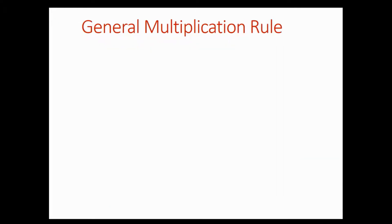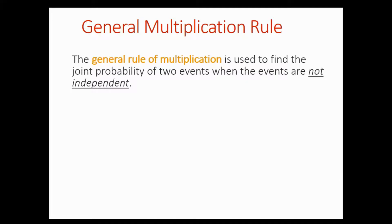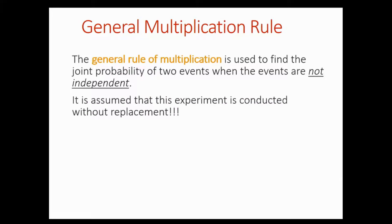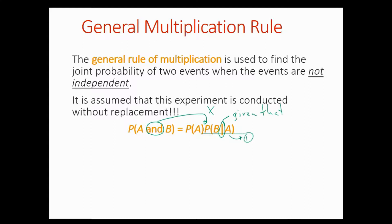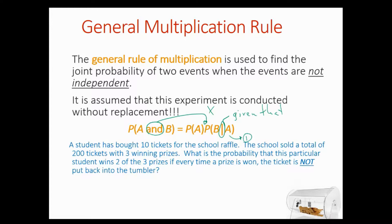The general rule of multiplication is used to find the joint probability of two events when the two events are not independent — meaning one affects the other. So it assumes that this experiment is conducted without replacement. The formula is: the probability of A and B is equal to the probability of A times the probability of B given A, which means A happened first and since A happened already it has affected B.